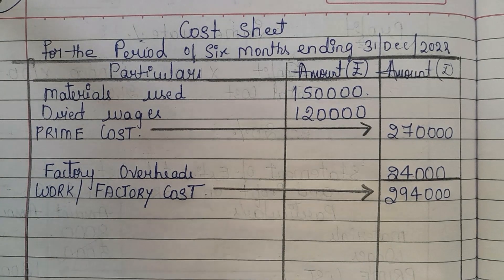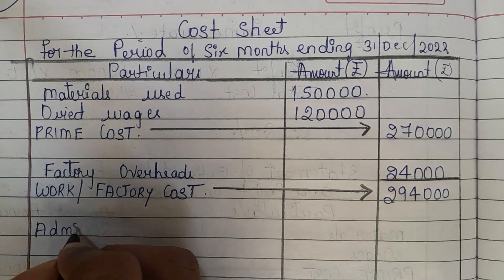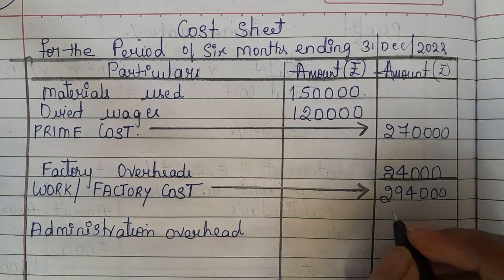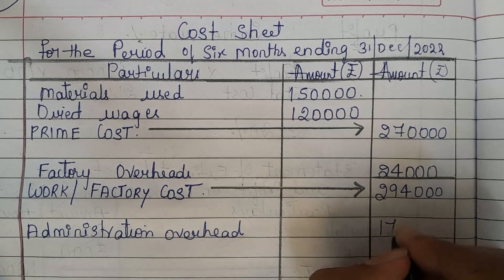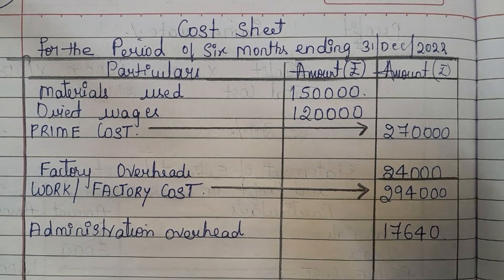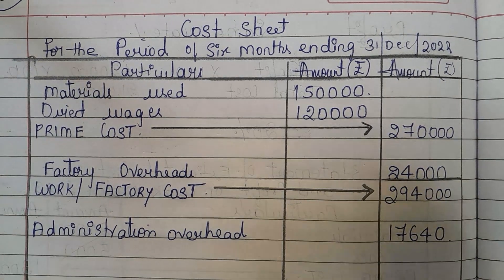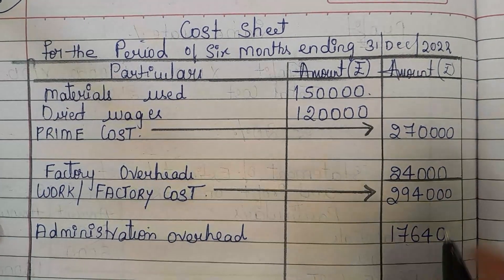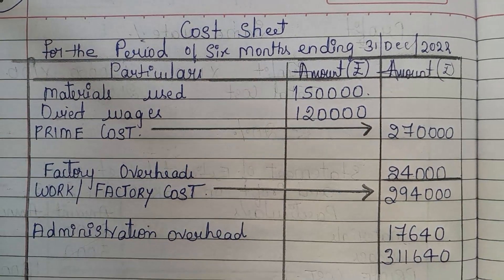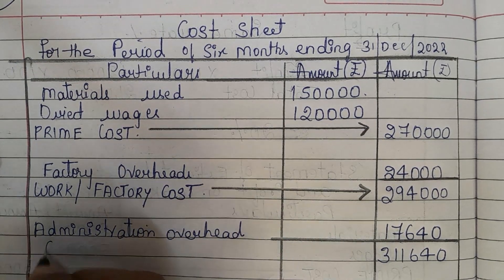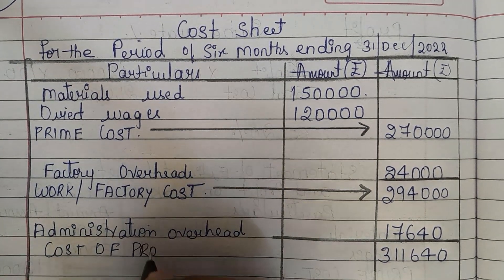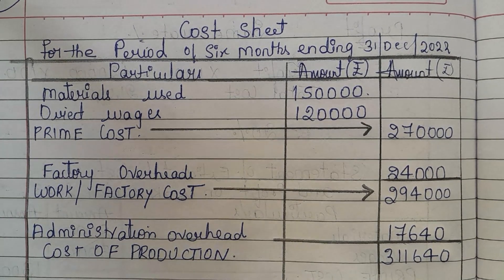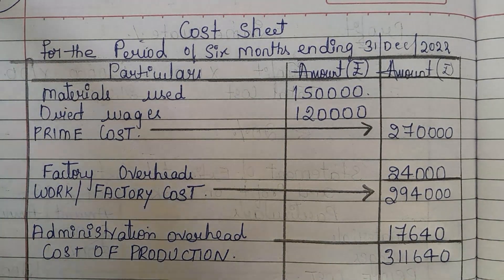Next, we need to add administration overhead, which is 17,640. Add 2,94,000 plus 17,640 and it is 3,11,640. This 3,11,640 is called cost of production. In this question they have not given any information regarding sales or profit, so here ends our cost sheet. But we still need to calculate the overhead rates.